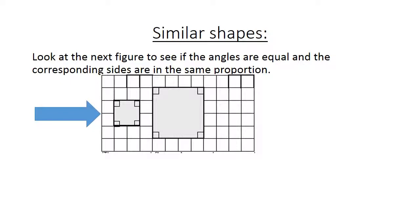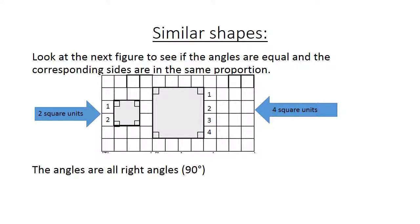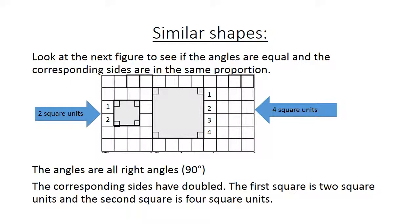Look at the first square — it has two square units. Then look at the next square — it has four square units. The right angles are all 90 degrees. The corresponding sides have doubled: the first square is two square units and the second square is four square units.